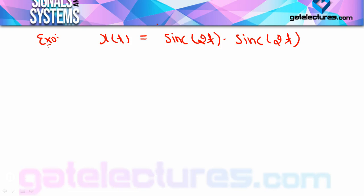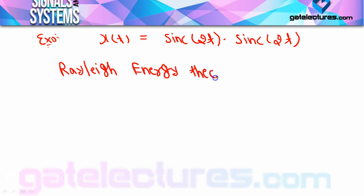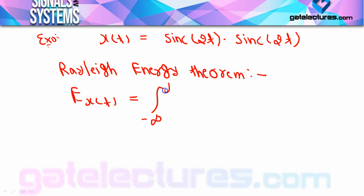Next concept जो आज की video में हम study करेंगे वो है Rayleigh Energy Theorem। Rayleigh Energy Theorem नाम से ही clear है कि यह energy calculate करने के लिए use किया जाता है। इसका formula है: energy of x(t) = ∫₋∞^∞ |x(t)|² dt, यह formula हमें already पता है।